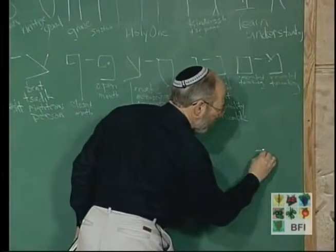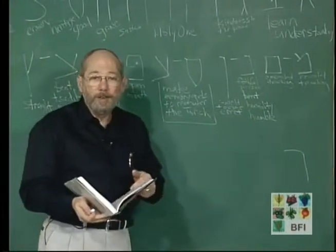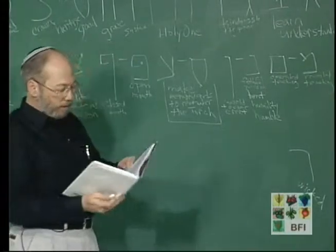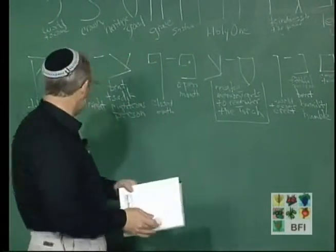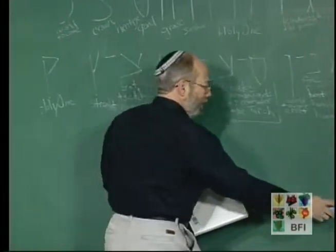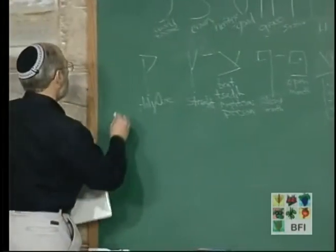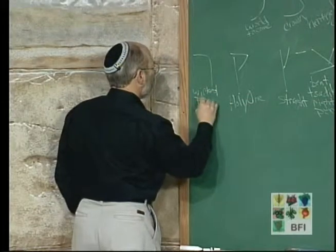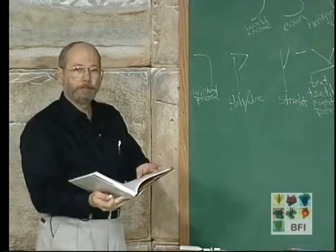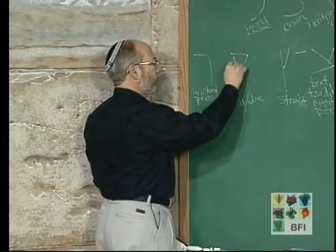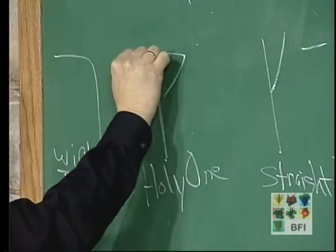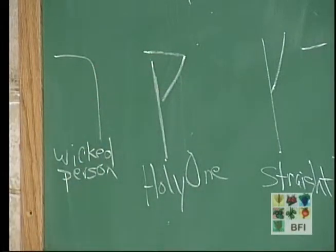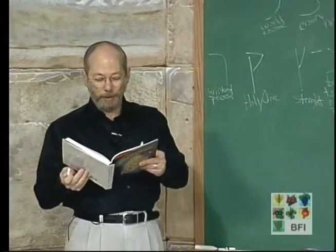Kuf stands for the Holy One, blessed is He. Now we come to the letter Resh. Resh in Hebrew stands for a wicked person — rasha in Hebrew, a wicked person. We need to put it right here because it interacts with the Holy One. The very first question they ask is: why is the face of the Kuf turned away? The face of the Kuf faces the opposite direction of the Resh. Because the Holy One, blessed is He, says: I cannot bear to look at the wicked one.